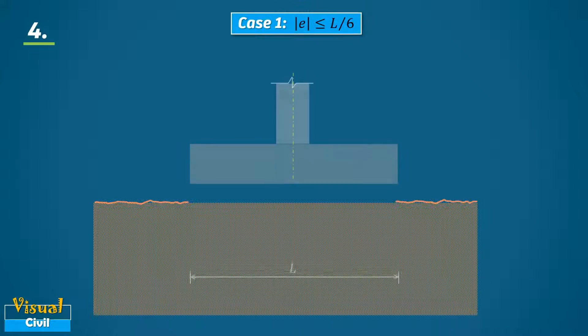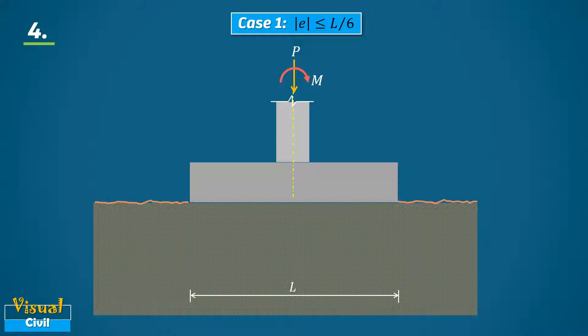Now let us consider the column transmitting axial load P with uniaxial moment M. Here, addition of moment will result in additional loading eccentricity e.